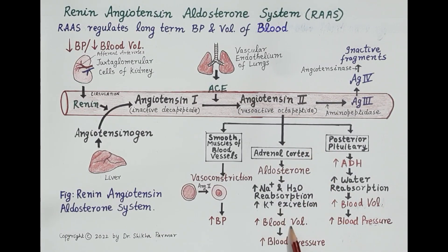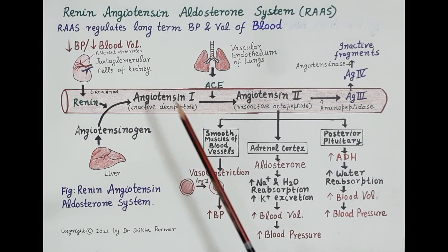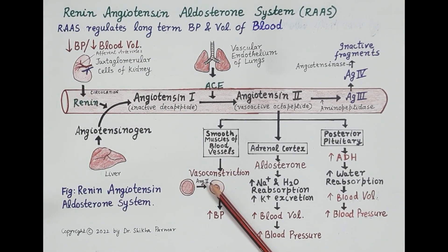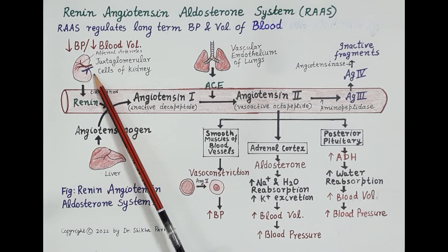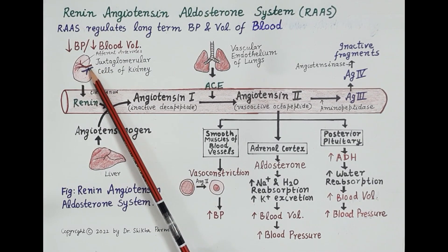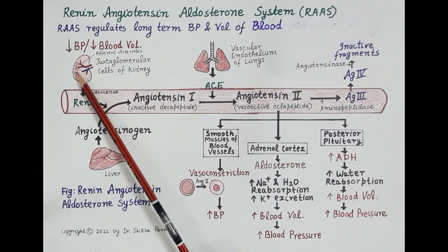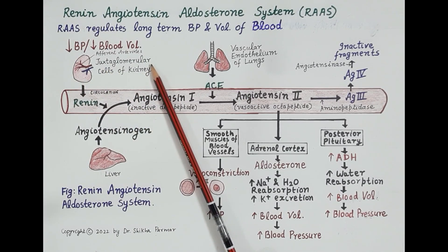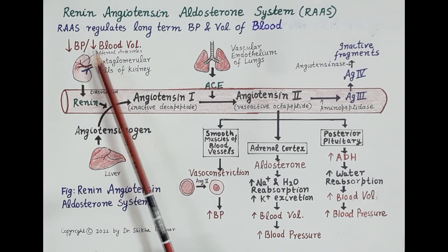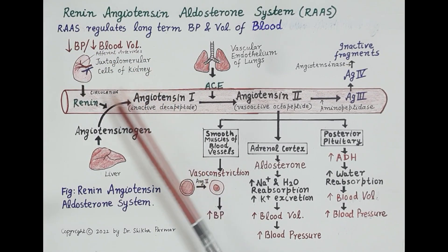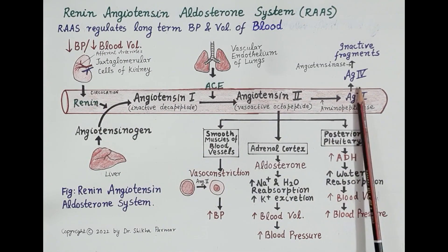Angiotensin 2 also increases the volume of blood. This diagram explains the physiology of the Renin-Angiotensin-Aldosterone System and how it regulates blood volume and blood pressure. The renal artery supplies blood to the kidney, and afferent arterioles are branches of the renal artery. The walls of these arteries possess specialized smooth muscle cells termed juxtaglomerular cells.